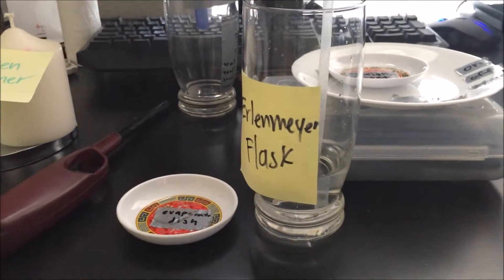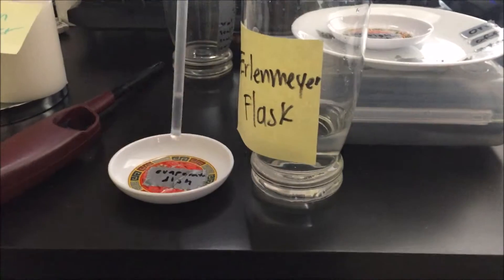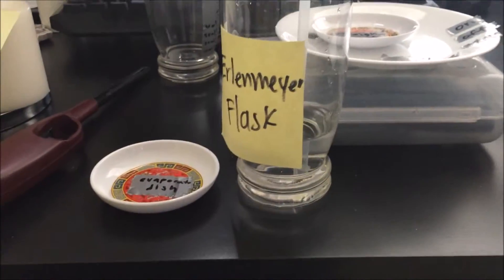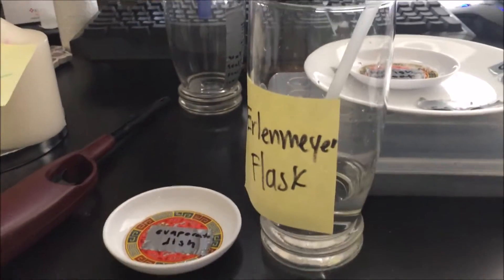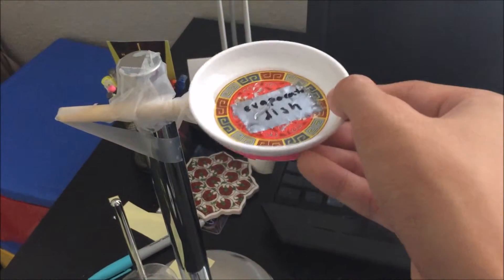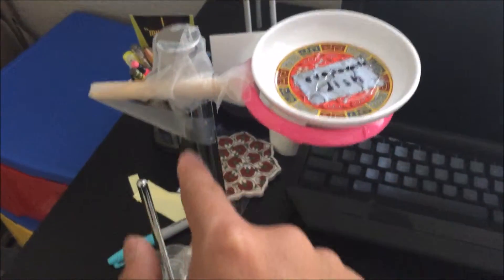For evaporation, you will need to put 5 ml of the mixed solution of NiCl2 and water into the evaporation dish. Place the evaporation dish with 5 ml of your solution onto the ring stand.